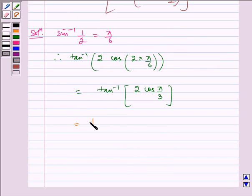Which is equal to tan inverse of 2 into 1 by 2, because cos pi by 3 is equal to 1 by 2.